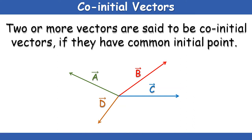Now we will talk about co-initial vectors. Two or more vectors are said to be co-initial if they have a common initial point — that is to say, if they have the same starting point. Vector A starts from this point in a given direction, B from the same point in another direction, C from the same point, and also D from the same point. Such vectors are known as co-initial vectors.